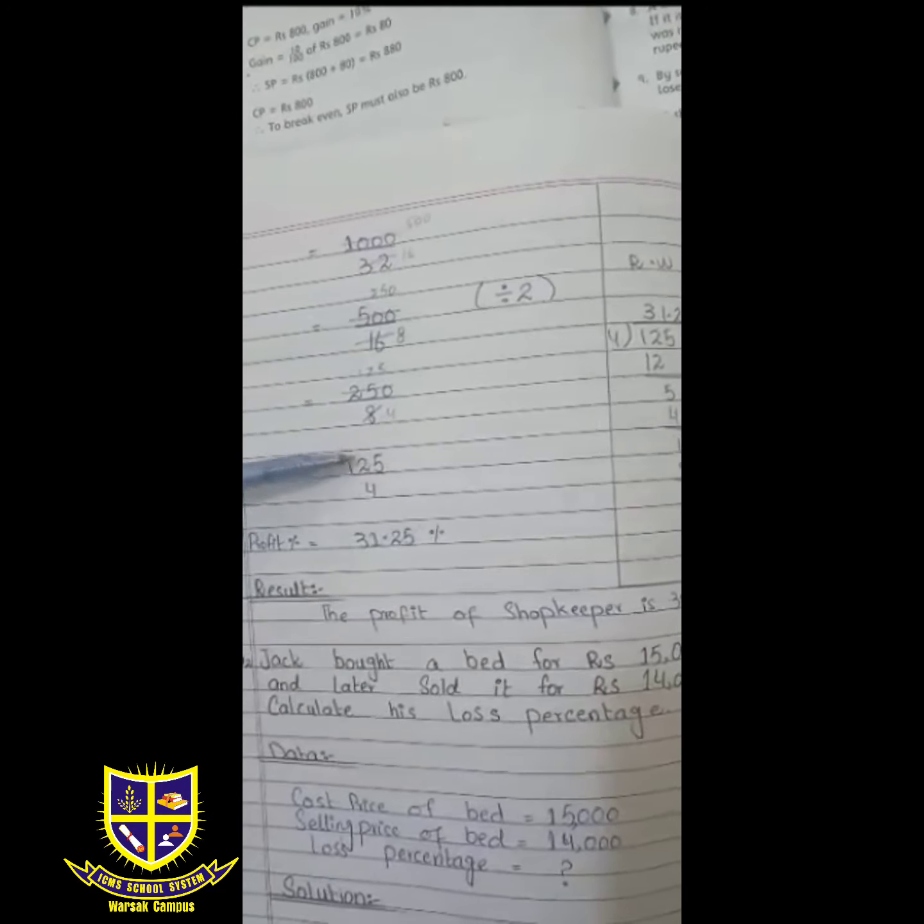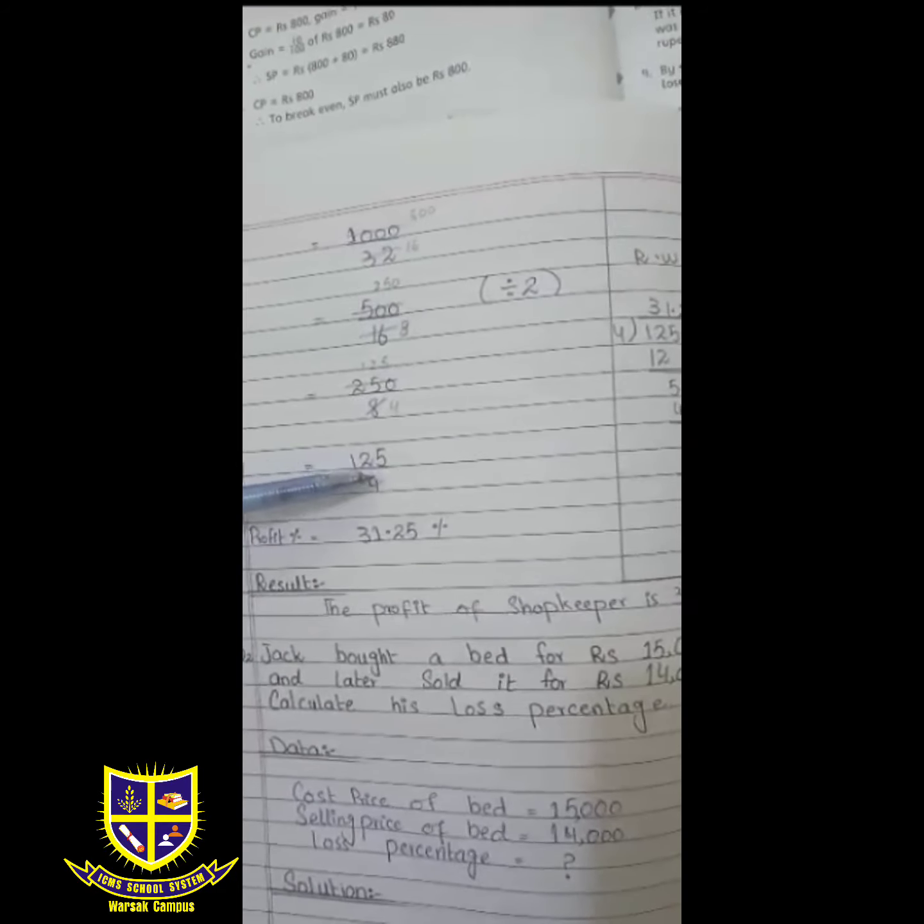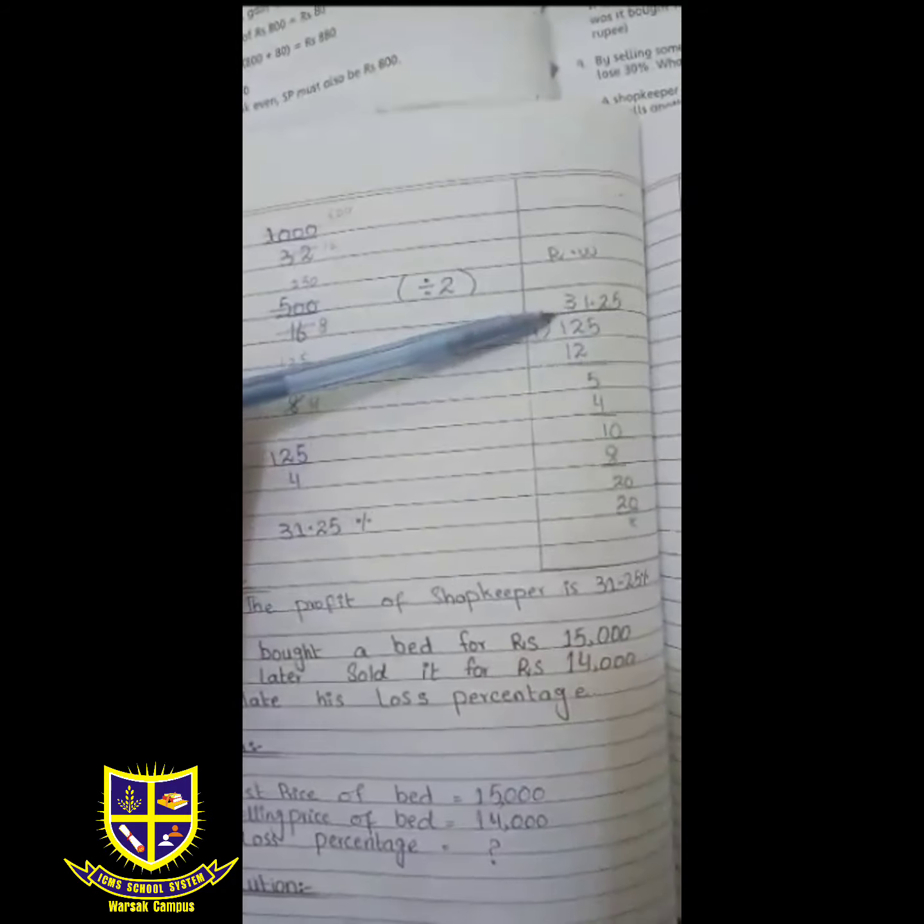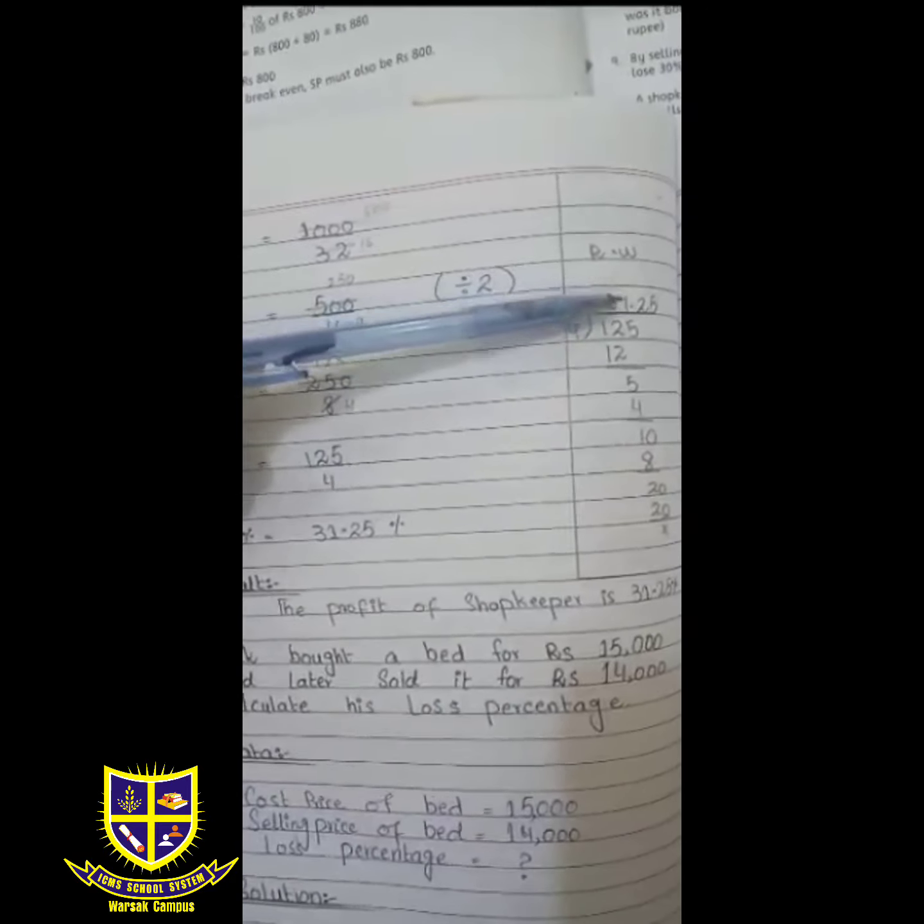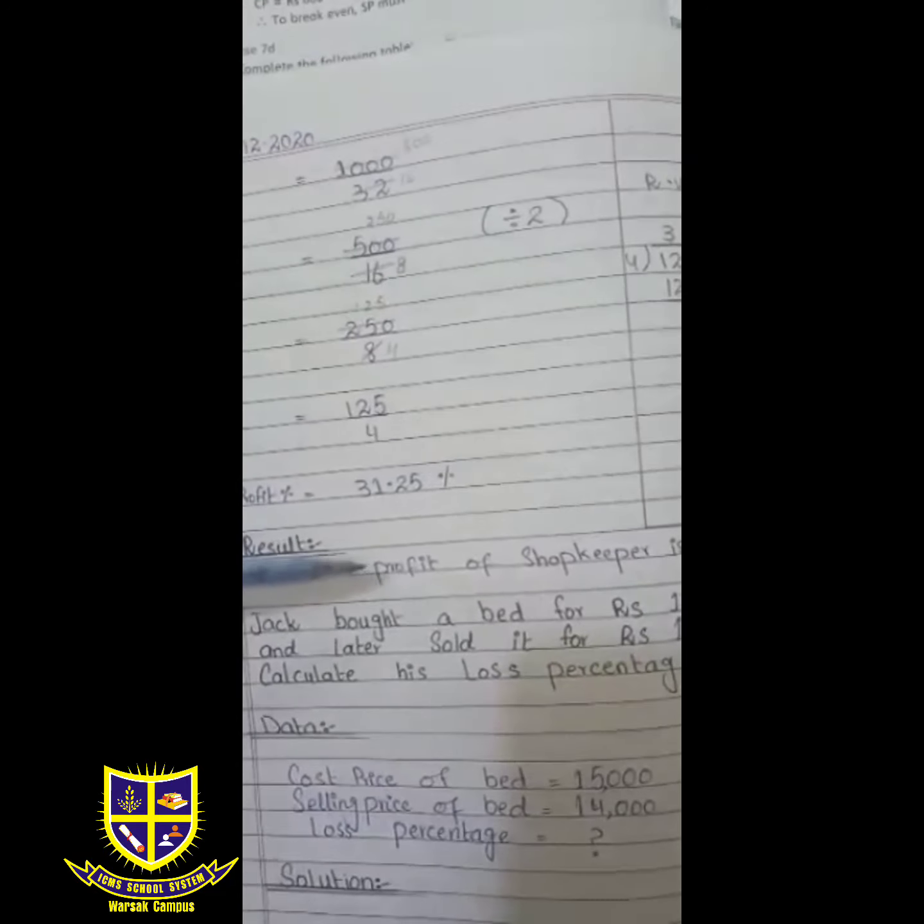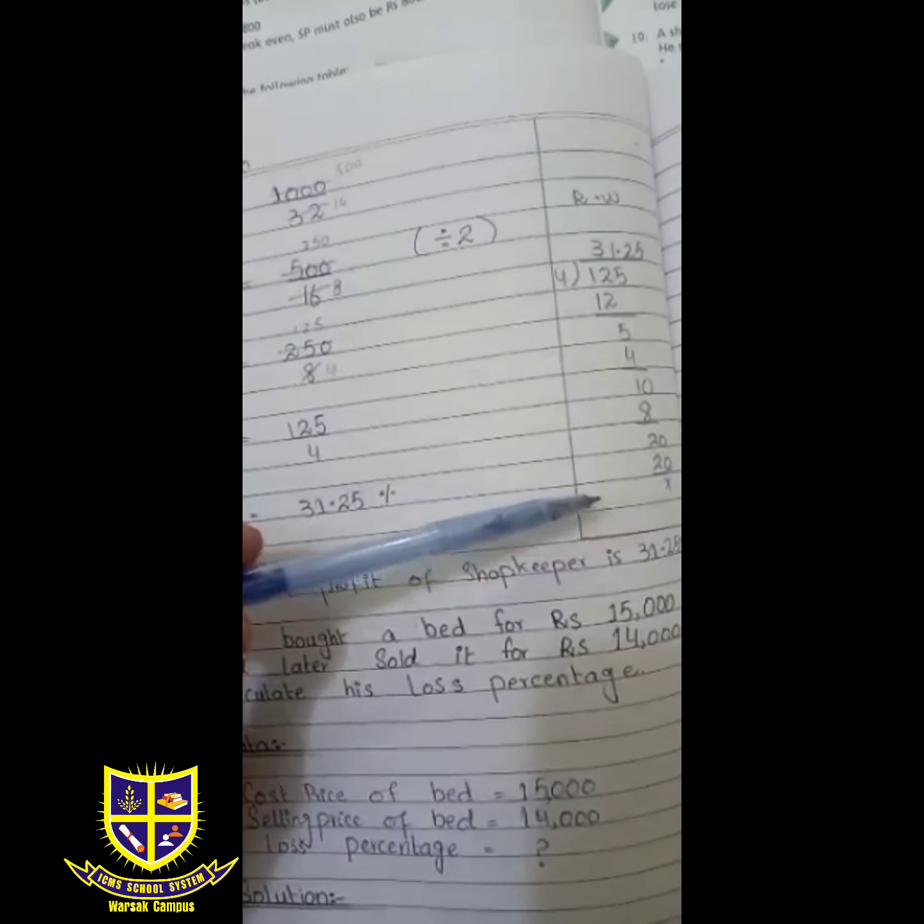The answer we have here is 125 divided by 4. So 125 divided by 4, and more cutting is not possible. So we now divide: the answer is 31.25. Profit percentage is 31.25%. Result: The profit of shopkeeper is 31.25 percent.